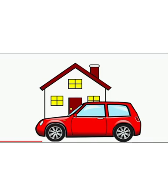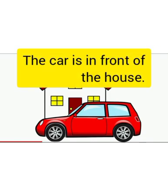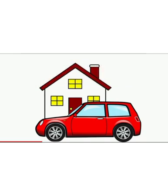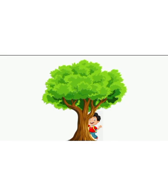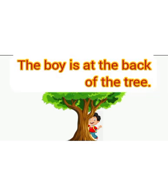Look, what do you see in this picture? Yes, we see a house and a car. Can you see where the car is? Yes, the car is in front of the house. In front of the house we also see a tree and a boy. Tell me — where is the boy? Is he in front of the tree? No, he is at the back of the tree. So the boy is at the back of the tree.